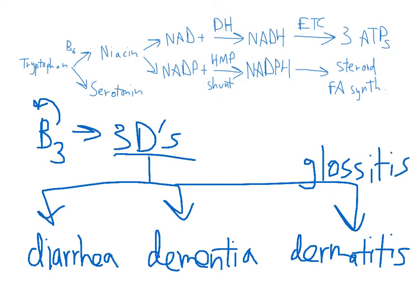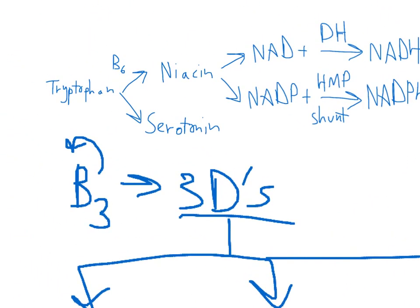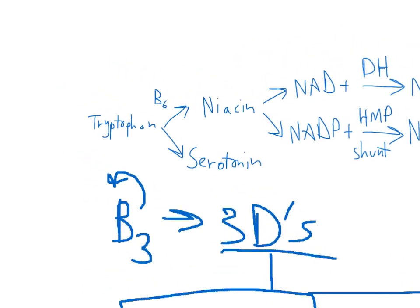So let's talk about some ways that you could get a niacin deficiency. So niacin, as I said, you can get it from tryptophan, but you can also get it from your diet. Obviously, if you had an alcoholic or someone who was malnourished, if you didn't have it in your diet, then you'd have less niacin.